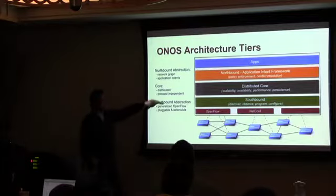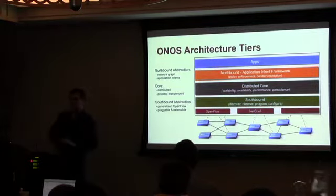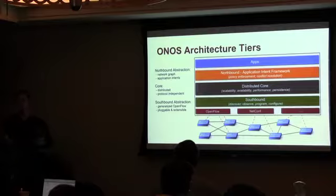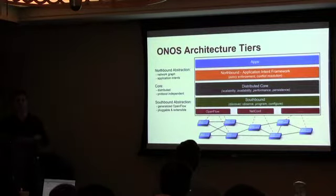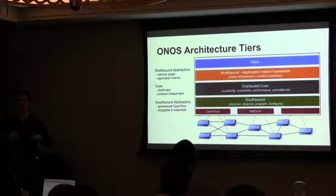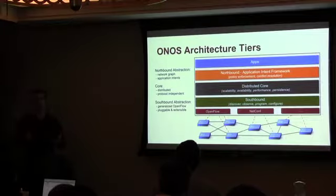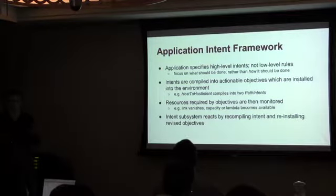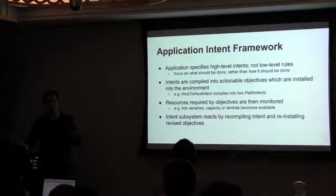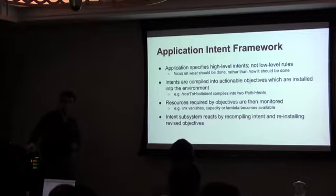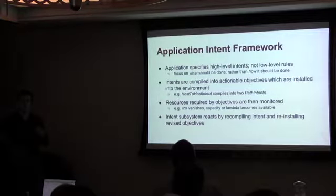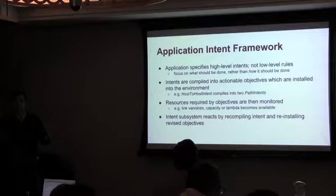At the north, we have a set of tiered abstractions to allow applications to develop code. They start with low-level abstractions of devices, links, hosts, and so forth. We then stitch those together into a network graph, which is a slightly higher-level abstraction. On top of that, we provide an application intent framework, which allows applications to have goal-oriented programming of the network. Intents are essentially specifications that allow applications to specify what they want, not how it ought to be done. This has benefits for both applications and the operating system.